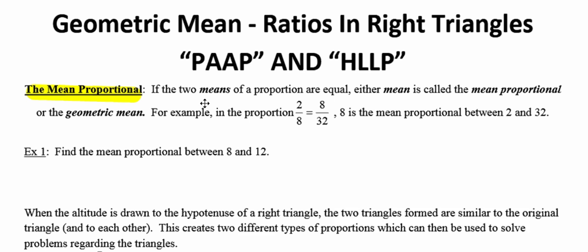For example, in the proportion 2 is to 8 as 8 is to 32, notice that 8 is in the mean spot of each proportion, making 8 the mean proportional between the other two numbers, 2 and 32, in that proportion.